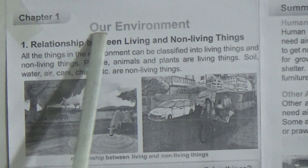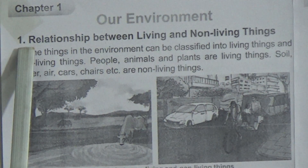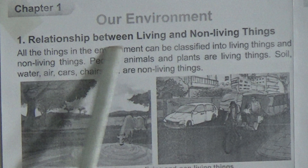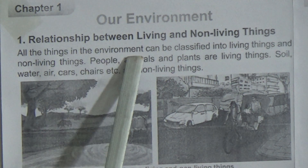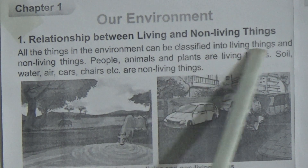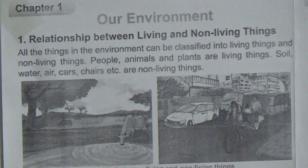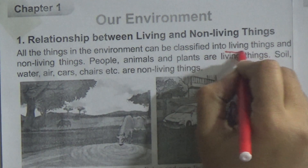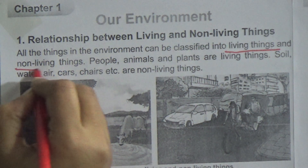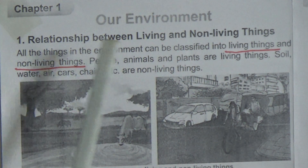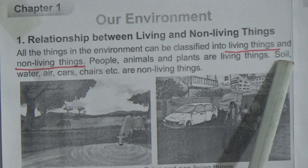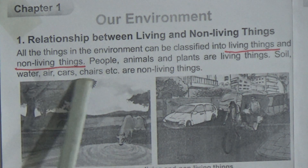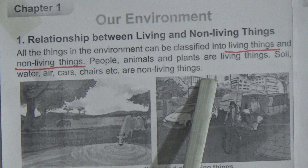Today we will discuss chapter 1. The name of the chapter is Our Environment. The first lesson of the chapter is Relation between Living and Non-living Things. All the things in the environment can be classified into living things and non-living things. Students, please underline these terms: living things and non-living things. People, animals and plants are living things. Soil, water, air, chairs, etc. are non-living things.